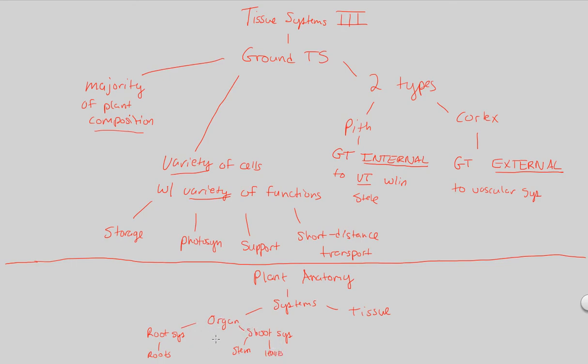We covered organs basically in the first three or four videos. Now in the last three or four videos, we've been looking at the tissue systems of plant anatomy. Those tissue systems are the dermal, the vascular, and of course the ground. That's basically what plant organization broadly looks like.